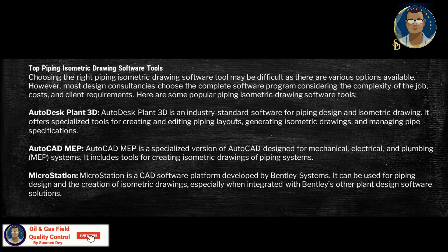Here are some popular piping engineering software tools. Autodesk Plant 3D is an industry-standard software for piping design and isometric drawing. It offers specialized tools for creating and editing piping layouts and isometric drawings, and for managing pipe specifications. AutoCAD MEP is a specialized version of AutoCAD designed for mechanical, electrical, and plumbing (MEP) systems. It includes tools for creating isometric drawings of piping systems.